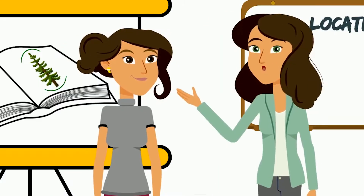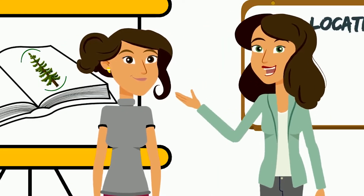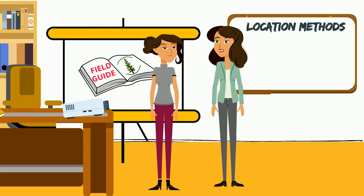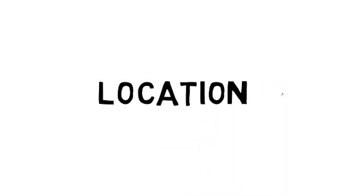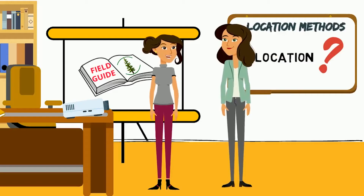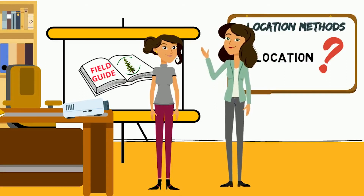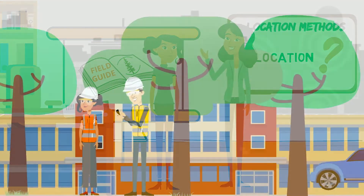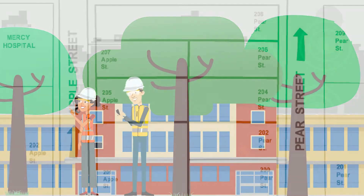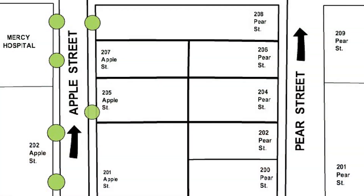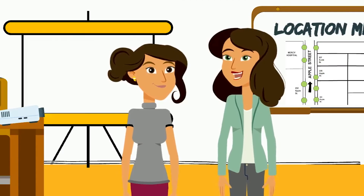Some location methods also work better in certain kinds of sites. But before we get into the specifics, let's take a few steps back. Why is location even important in the first place? To map the trees, right? That's part of it. The other really important reason to carefully record a tree's location is to be able to reliably find that tree again in the future — to monitor for tree mortality, and for changes in growth and health over time, we need to track every individual tree.